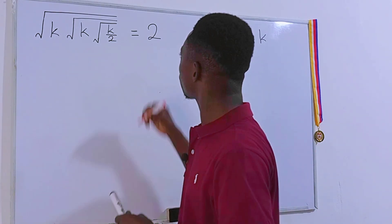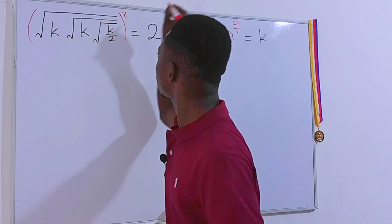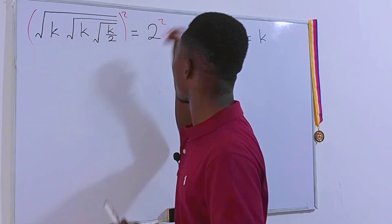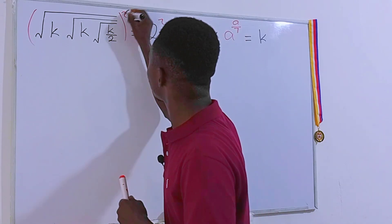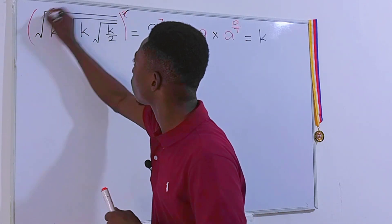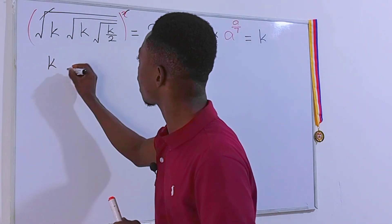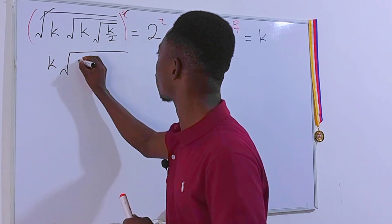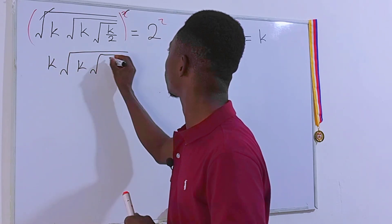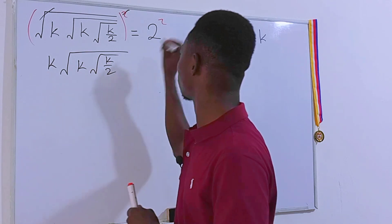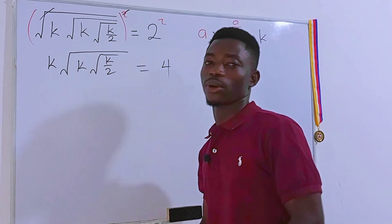The first thing we have to do is to raise each side of the equation to the second power, so that on the left hand side the square will cancel out. We'll be left with k times the square root of k times the square root of k, divided by 2, and this is equal to 4.